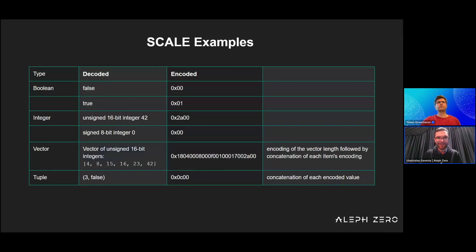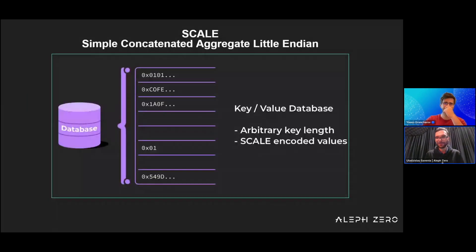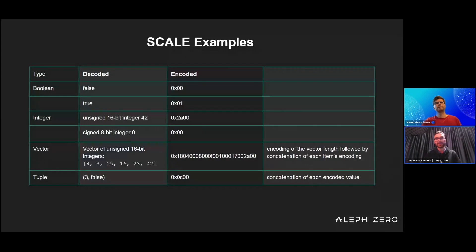For more complex stuff — remember the 'concatenated' word in the name — for vectors and tuples it simply concatenates them together. For vectors specifically it also stores the amount of elements at the beginning. So you can see the types you can typically use within ink.